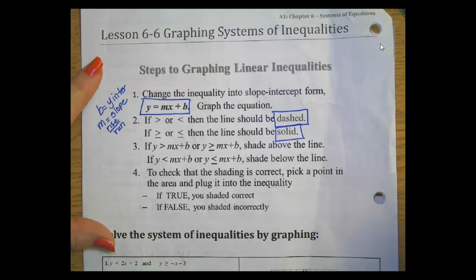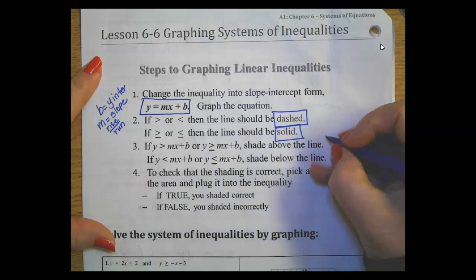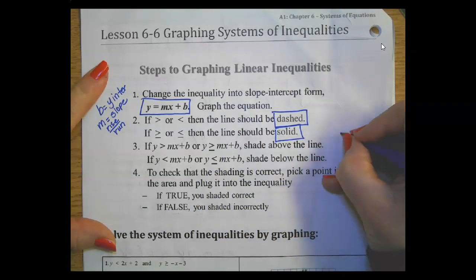Remember shading: if it's greater than in any combination, you shade up above the line. Always think of the sun as being up and the ground being at the bottom.